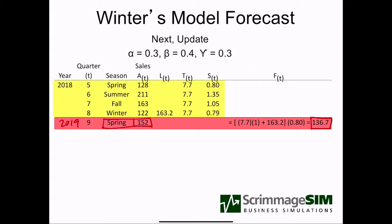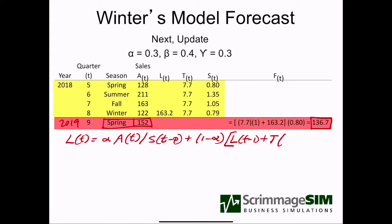First, we'll update the level. The formula for updating the level is: L(t) = alpha times the actual value in period t divided by the seasonal factor in period t minus p. In other words, we go back one season — back to spring of 2018 — to figure out what spring does to our sales. We take that plus one minus alpha times the level in period t minus one plus the trend in period t minus one. So we project forward what level we thought we would have in spring of 2019 and balance that with what we observed. Since we under-forecast, we're going to increase our level from what we thought we would have had.